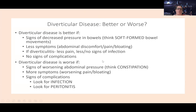Diverticular disease overall is better when there are signs of decreased pressure in the bowel — soft stools, less bloating, pain, and discomfort. For diverticulitis, less pain and no signs of infection or complications are good signs. It gets worse with signs of worsening abdominal pressure, continued or worsening constipation, increasing symptoms, and of course any signs of infection or peritonitis.